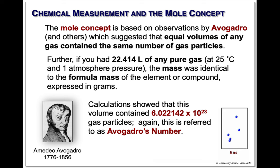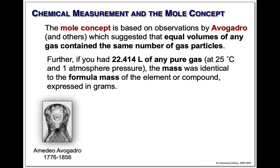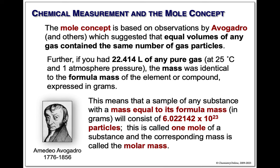Further, if you took exactly 22.4 liters of any pure gas and weighed it, the mass of the gas would equal the formula mass. Calculations show this was 6 times 10 to the 23rd — Avogadro's number. So what this means is: if you take the mass of any substance equal to its formula mass, it will have this number of particles in it. This is going to allow us to do quantitative chemistry, because you can take the same number of particles and react them with each other. This is called the molar mass — the mass of one mole.